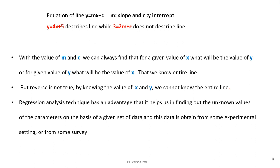We have to find out the parameters. The equation of a line is y equal to mx plus c, where m is the slope and c is the y-intercept. For example, y equal to 4x plus 5 describes a line, but 3 equal to 2m plus c does not describe the line in the xy plane. With the values of m and c, we can always find out for a given value of x what will be the value of y, and vice versa — we can know the entire line. But by only knowing the values of x and y, we cannot determine the entire line. Therefore, it is important to find out the parameters, that is, the slope and intercept.